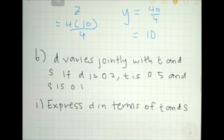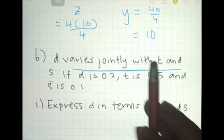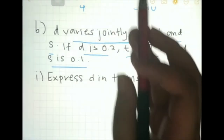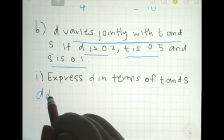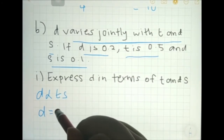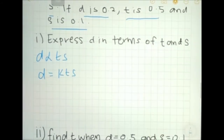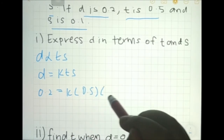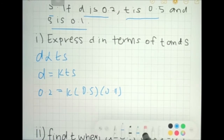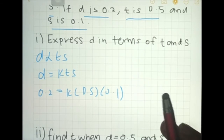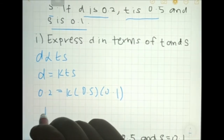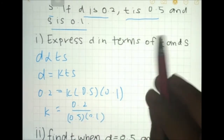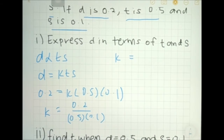Another question: d varies jointly with t and s. If d is 0.2, t is 0.5, and s is 0.1, express d in terms of t and s. The equation is d equals kts. Substituting: 0.2 equals k times 0.5 times 0.1. So k equals 0.2 divided by 0.05, which gives k equals 4.